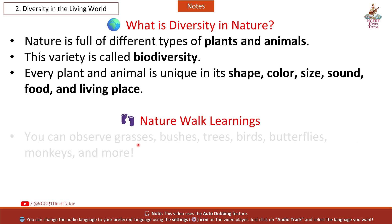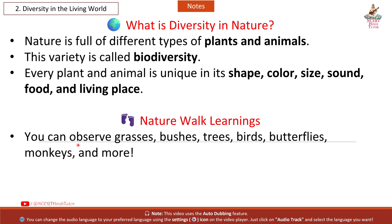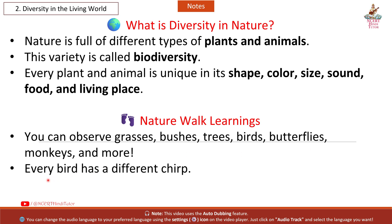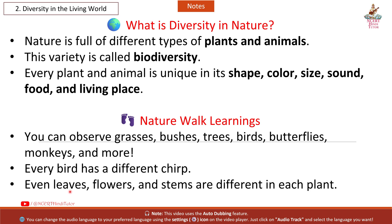Nature Walk Learnings: You can observe grasses, bushes, trees, birds, butterflies, monkeys, and more. Every bird has a different chirp. Even leaves, flowers, and stems are different in each plant.